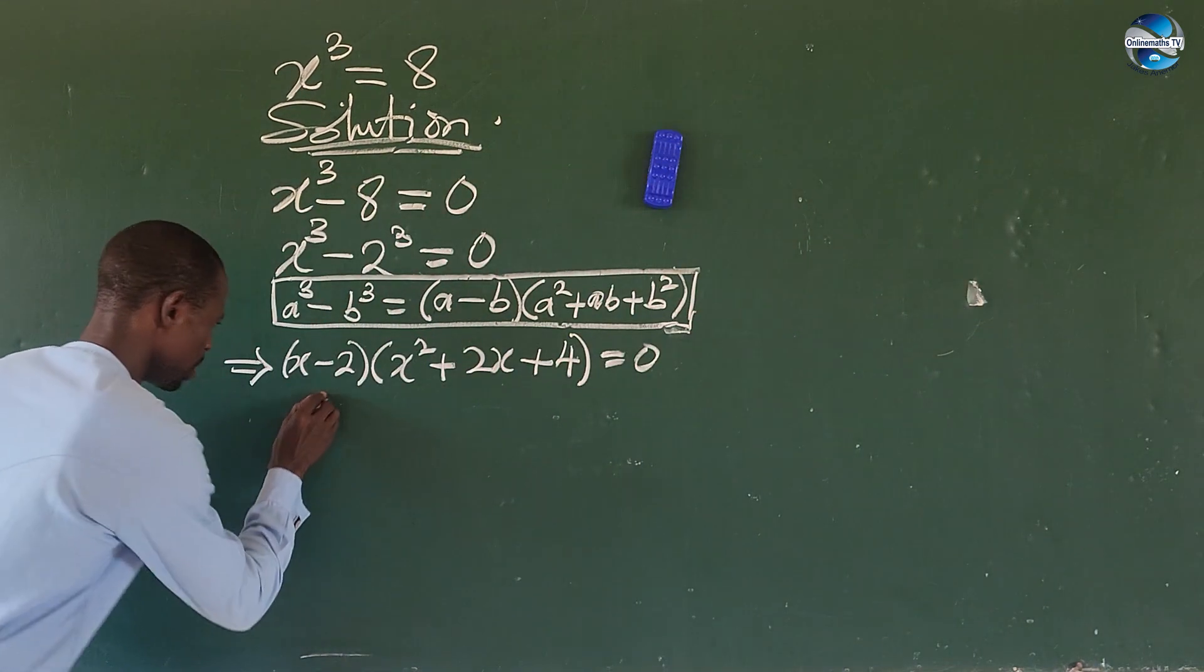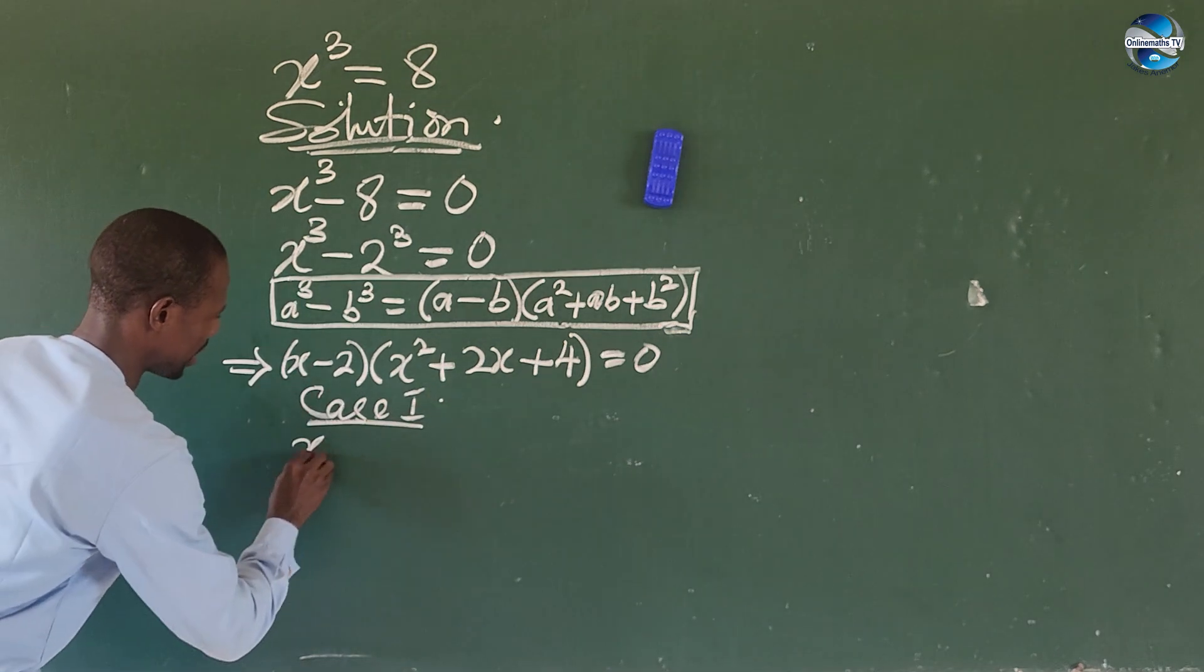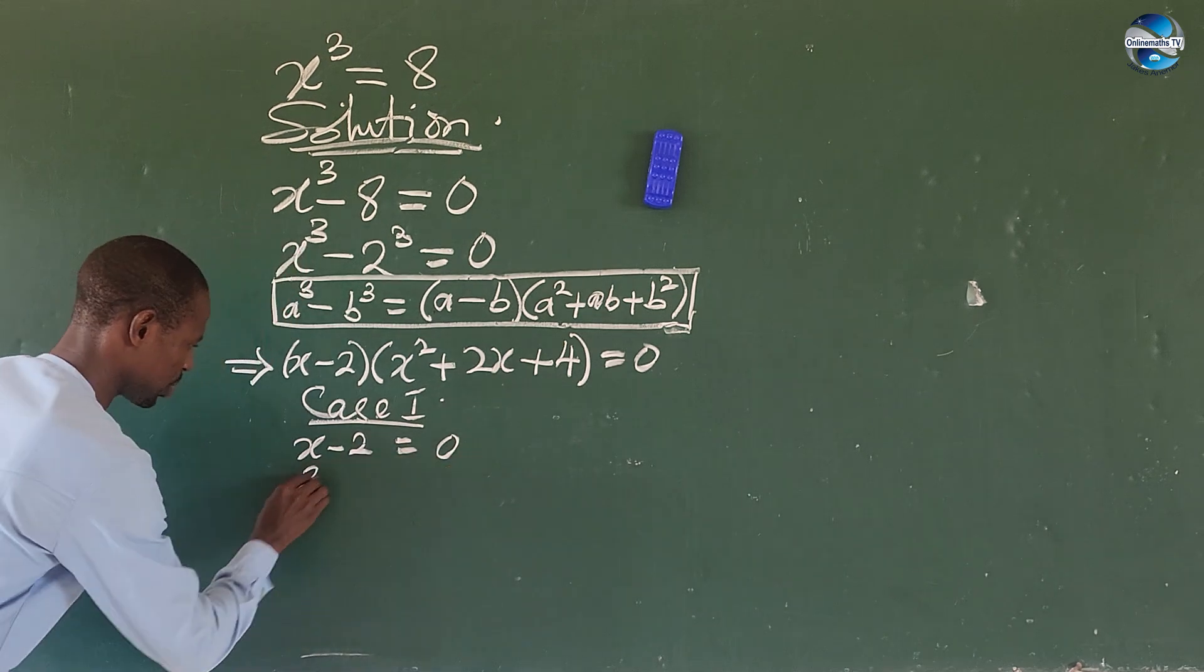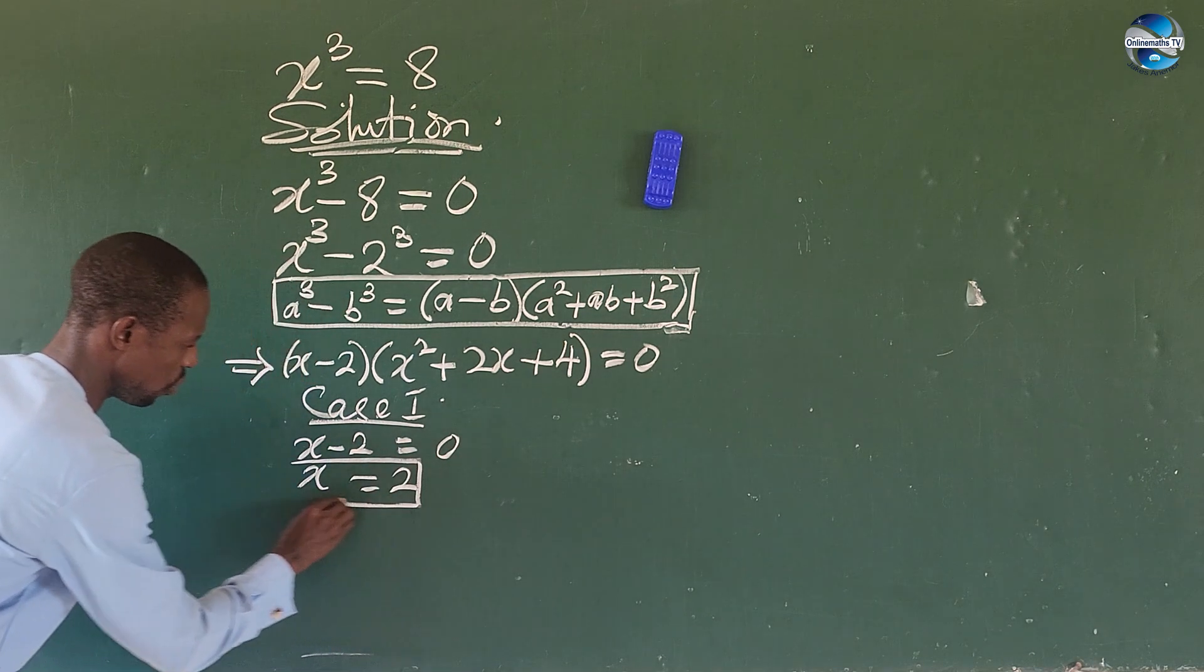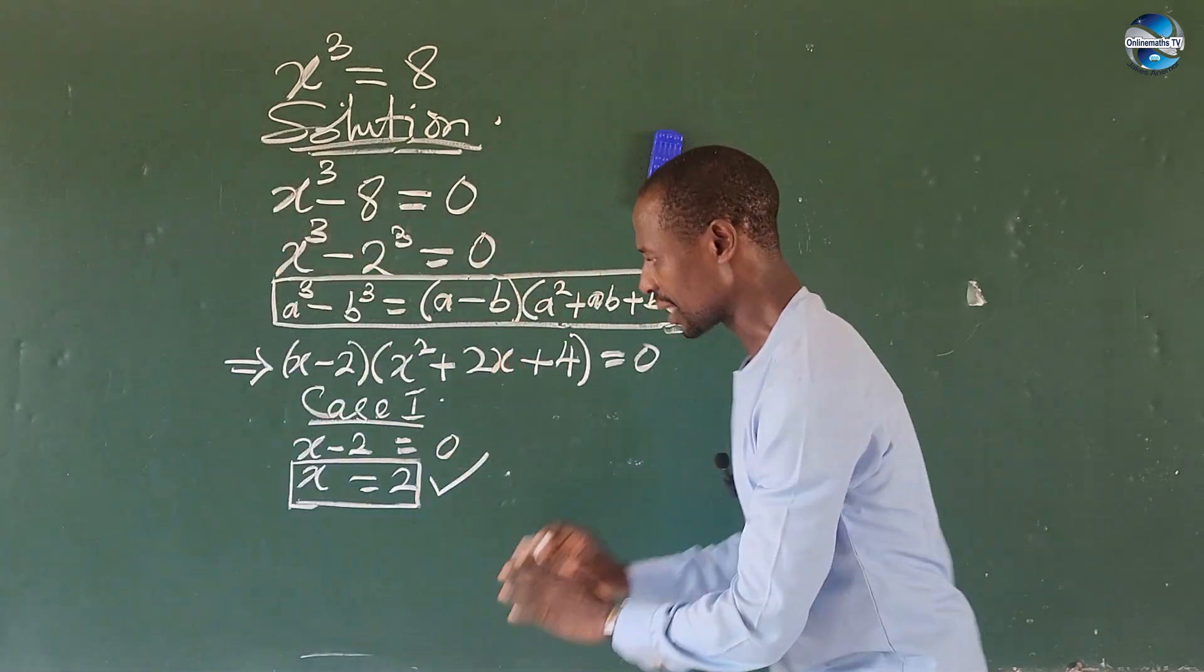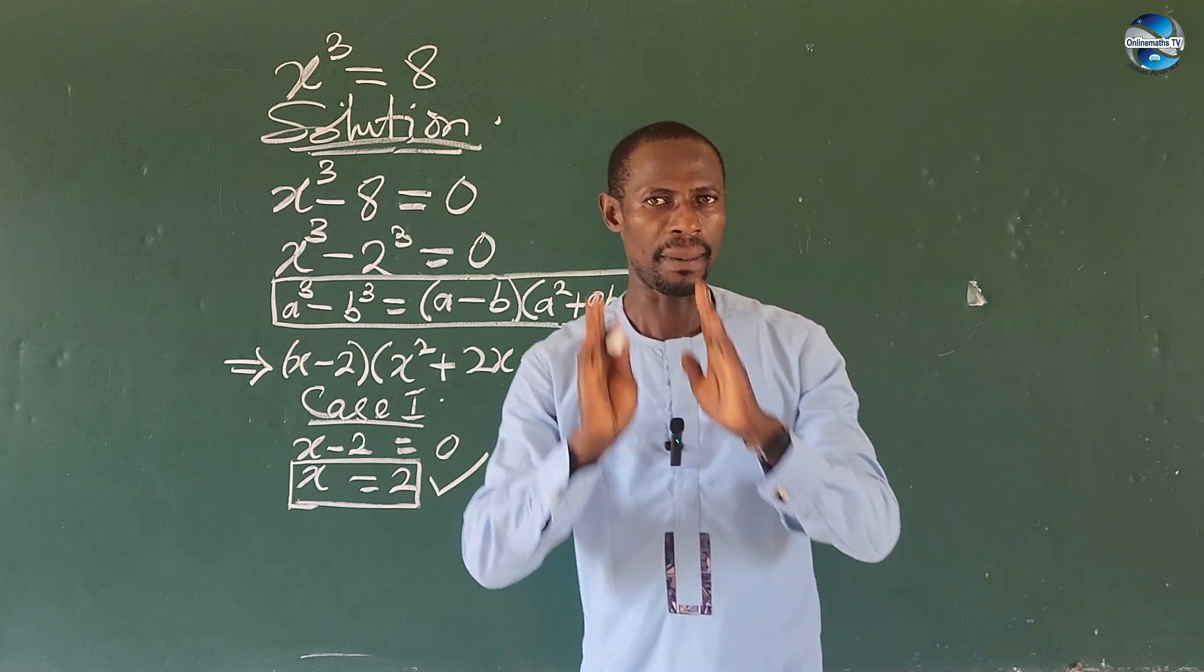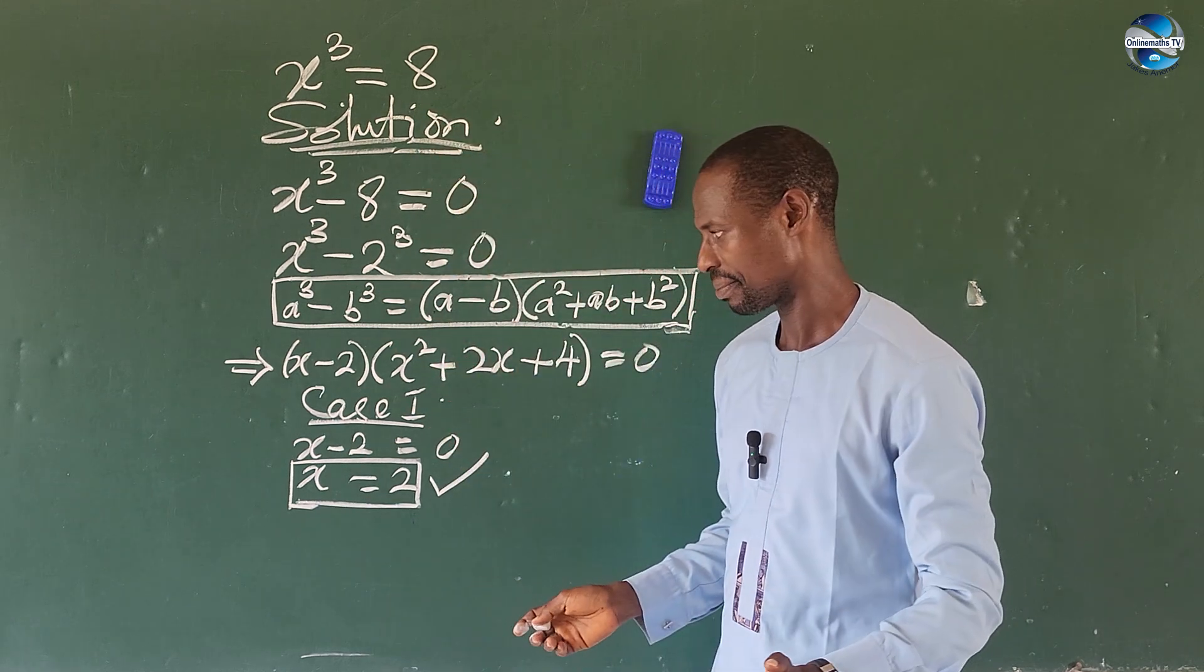Let's take case 1. Case 1, we will have here x - 2 = 0. Collect like terms. So this will give you x equals positive 2. I told you that this will give us positive 2, the real root to this challenge here.